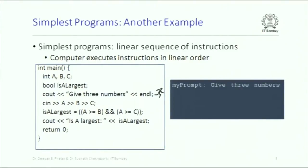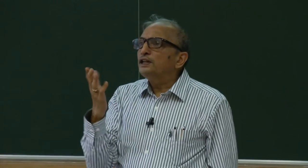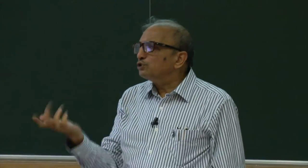This statement will be executed — you see a small fellow running, showing the computer is running to do something. The cout statement is an output statement with the stream operator. << means show this out, endl means end of line. So this is where you will see 'give three numbers'. In Code Blocks you will not see a prompt, but you will see a cursor indicating where the next output comes or where input has to be typed.